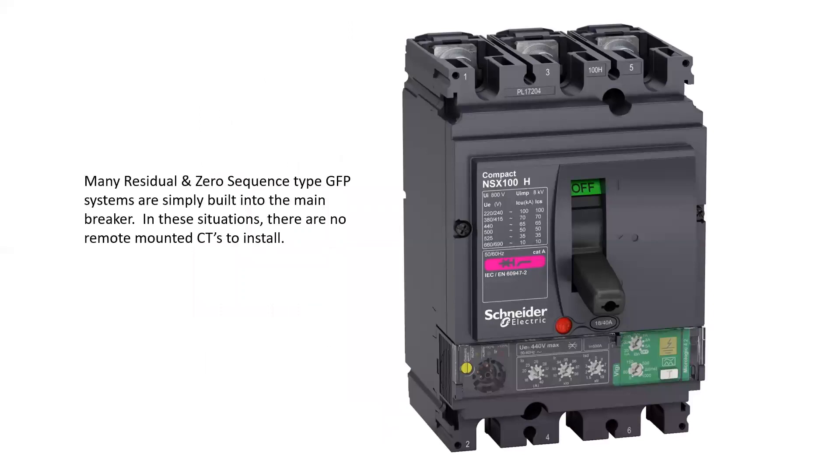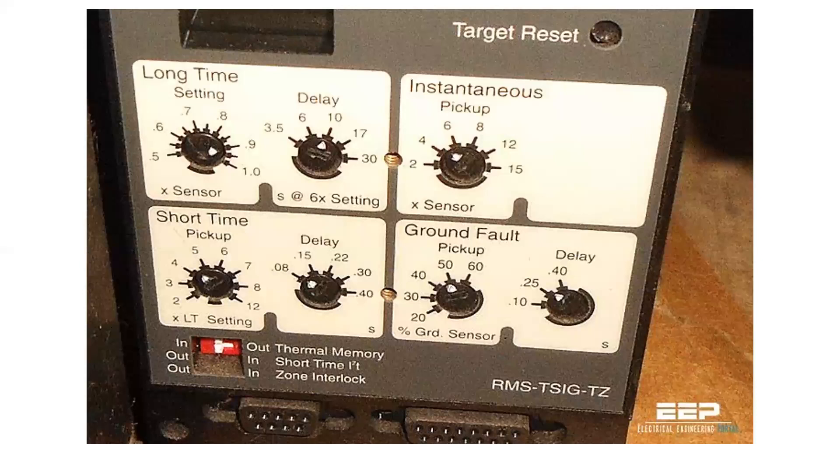So here is a ground fault protection breaker. It has the CTs inside it and it has settings on the bottom. So all of the shunt trip and the relay and the CT is all built into the breaker itself. And so you would be able to set with a dial cam how many amps and for how long that ground fault current is able to flow before the main breaker trips.